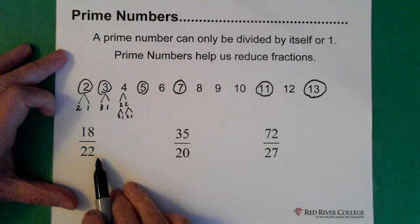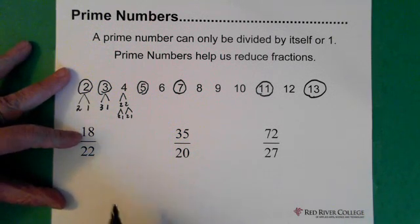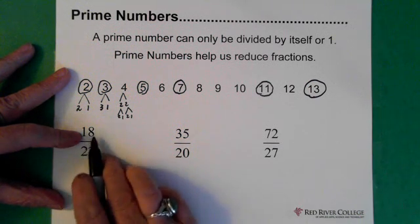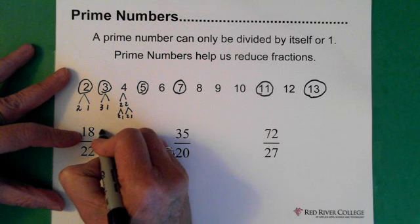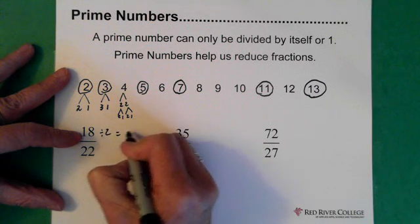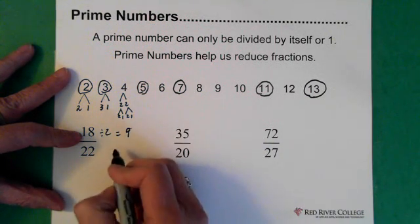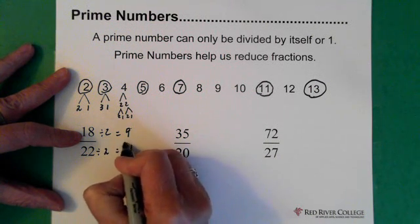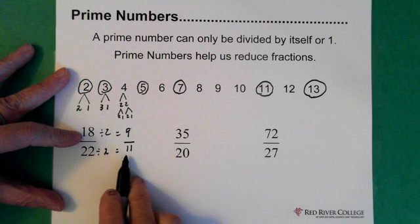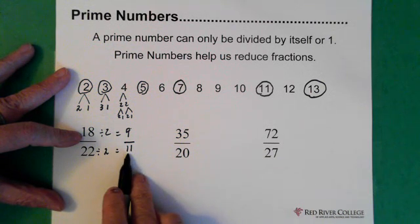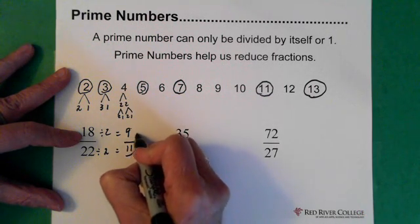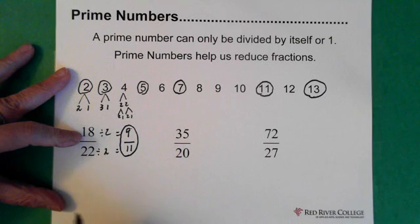Eighteen divided by twenty-two. Are they divisible by two? Yes. So we divide the top by two and get nine, and divide the bottom by two and get eleven. Nine over eleven — eleven is a prime number, so at this point we're finished. We can only go as far as nine over eleven.